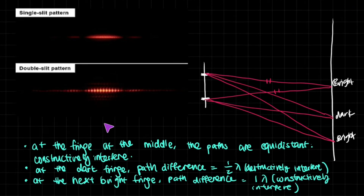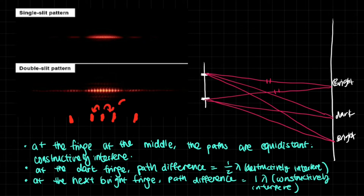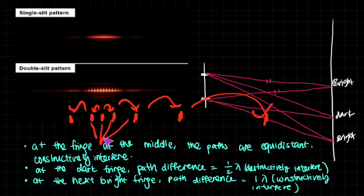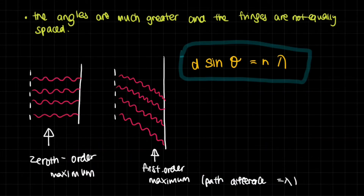So for the diffraction grating: zeroth maxima, first order maxima, second order maxima — it's further apart, distinctly further apart. Third order maxima, fourth order maxima, and so on. The angles are increasing; they're all coming from this point in the diffraction grating and their angles are increasing. The angles are much greater and the fringes are not equally spaced, unlike the Young double slit experiment.